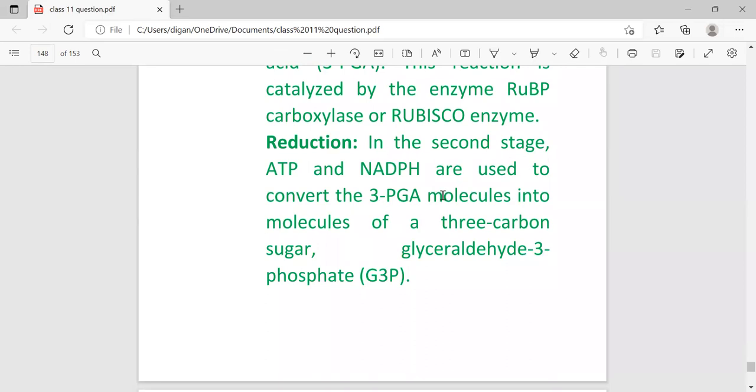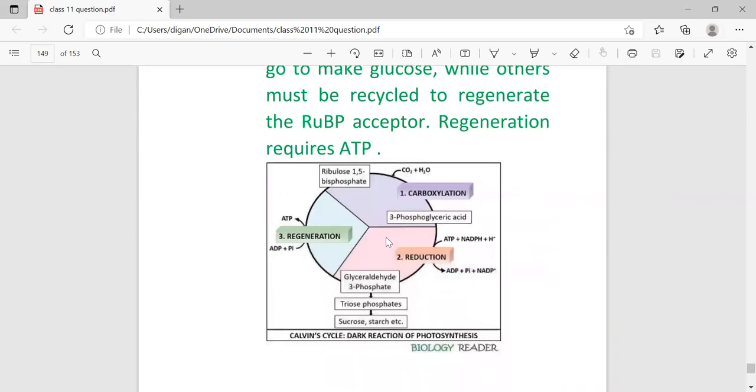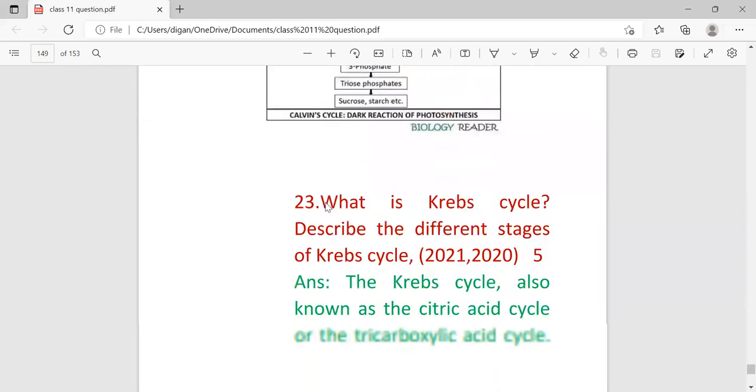Second stage is reduction reaction. ATP and NADPH are used to convert the 3-PGA molecules into molecules of a three-carbon sugar glyceraldehyde-3-phosphate, G3P. Third is regeneration. Two molecules of G3P go to form glucose, while others must recycle to regenerate the RuBP acceptor, and regeneration requires ATP. First is carboxylation step, second is reduction, third is regeneration. From twelve molecules of glyceraldehyde-3-phosphate, two molecules form triose phosphate used in formation of sugar, and other ten molecules undergo regeneration to form ribulose-1,5-bisphosphate. This is called Calvin cycle.